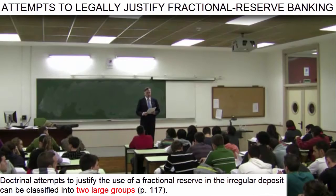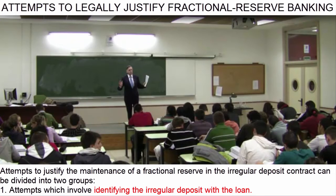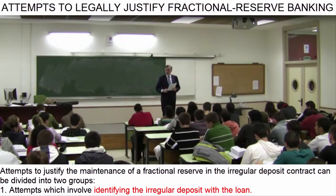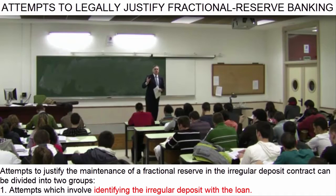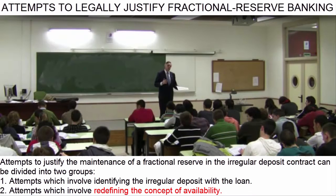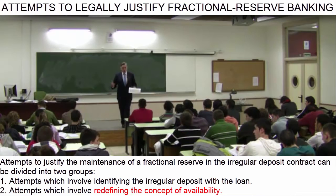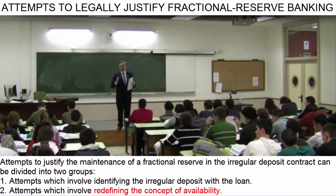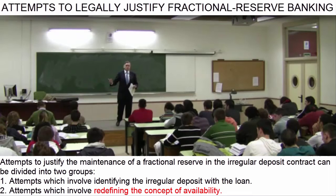The first group of theories in support of this banking practice rest on an attempt to identify the deposit contract with the loan contract. The second group of theories start from the acknowledgement that what the first group were intended to accomplish is impossible — that it is impossible to identify the deposit contract with the loan contract. Though this second group, which are the majority within legal doctrine, begin with that recognition, they then offer the following apparent solution.